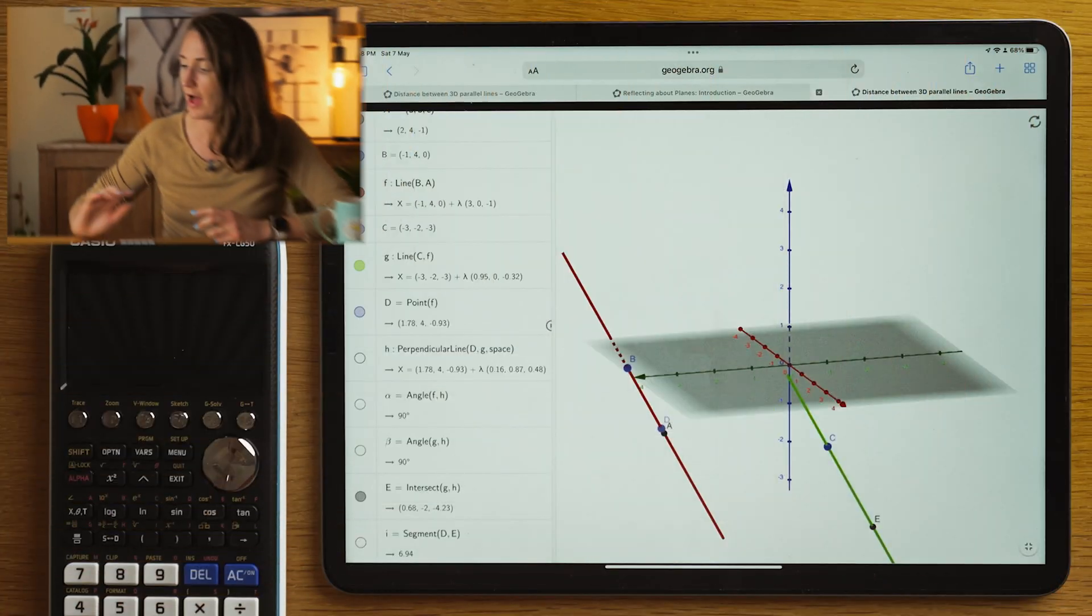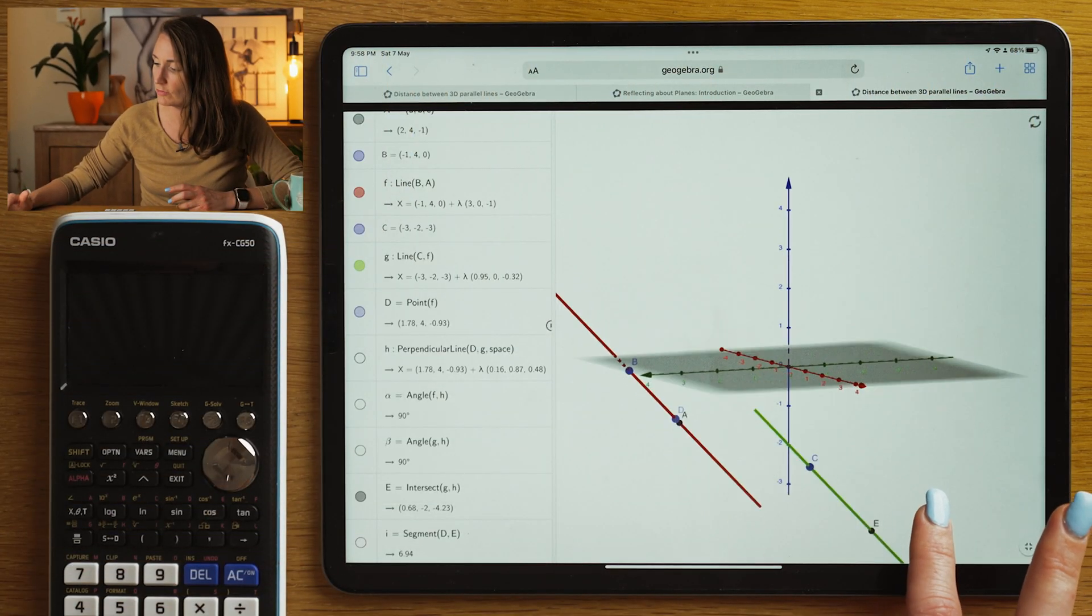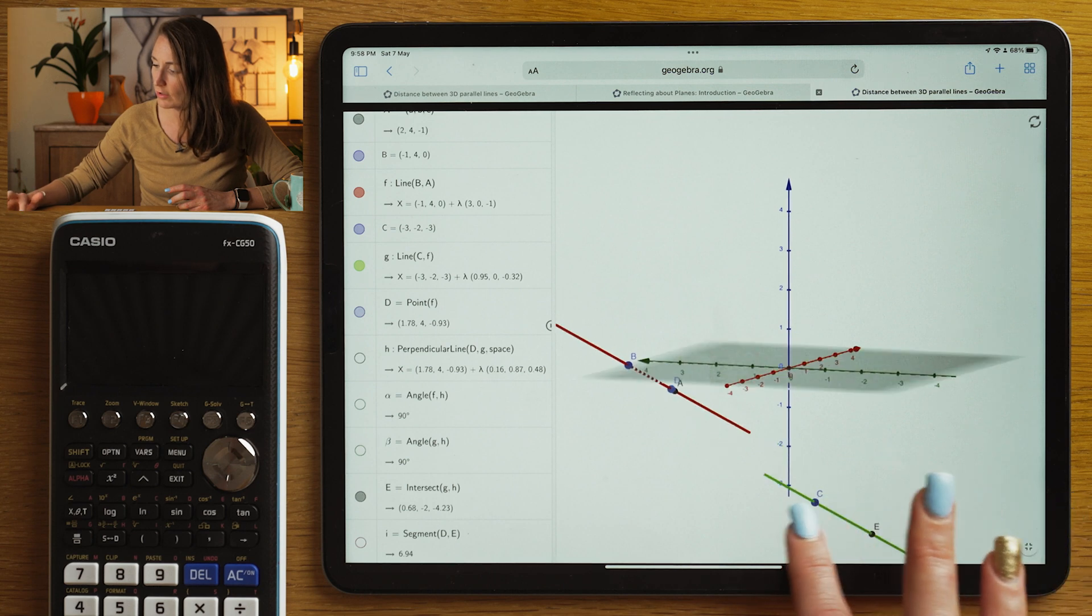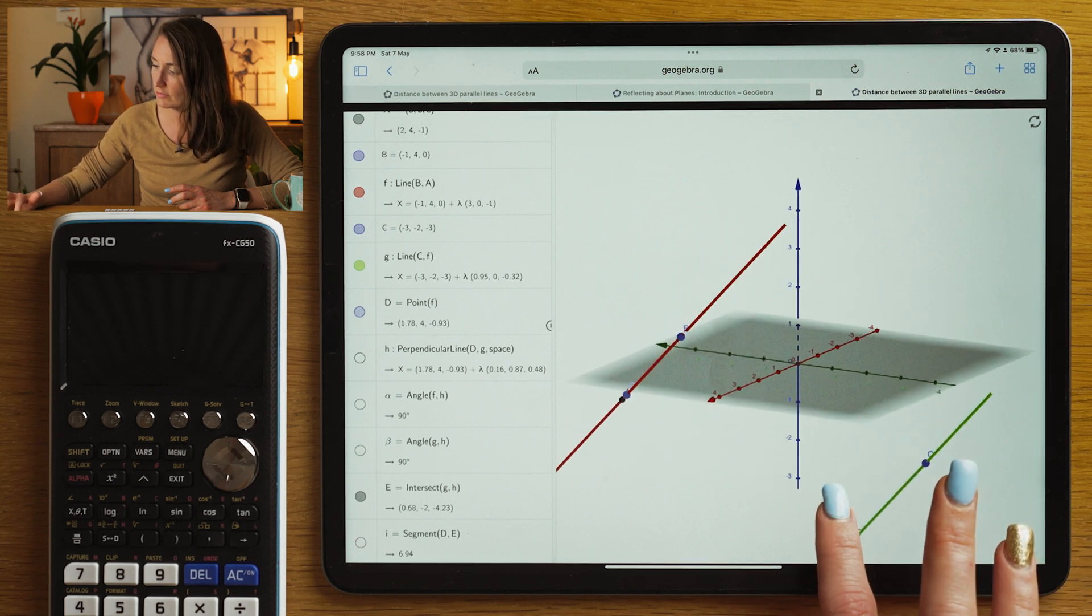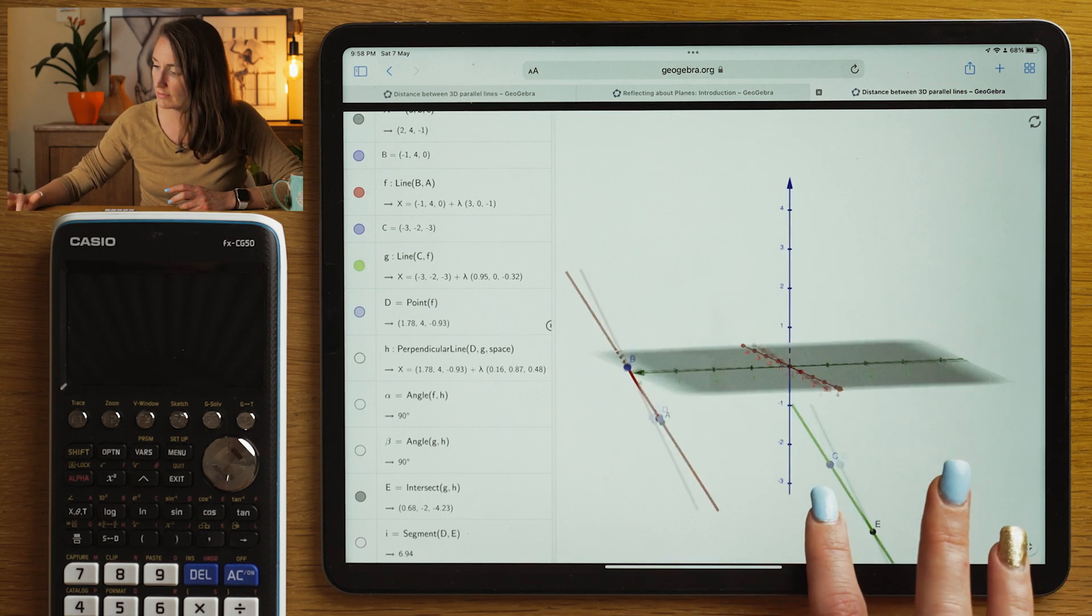This is a question I gave to my students this week and even my brightest students really struggled with this. So I want you to start by thinking what two parallel lines will look like in three dimensional space. We can see them here.